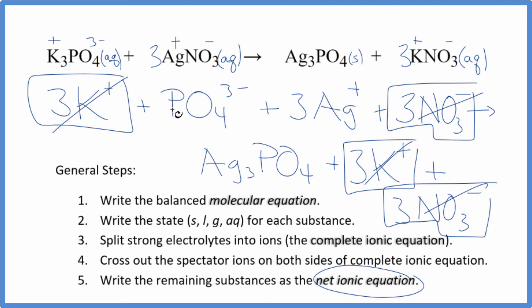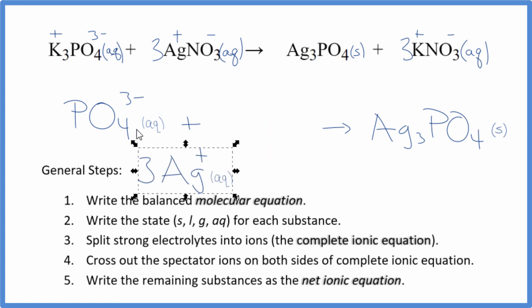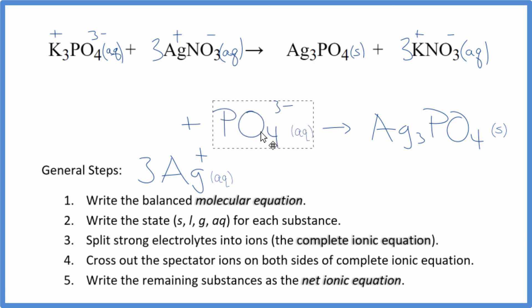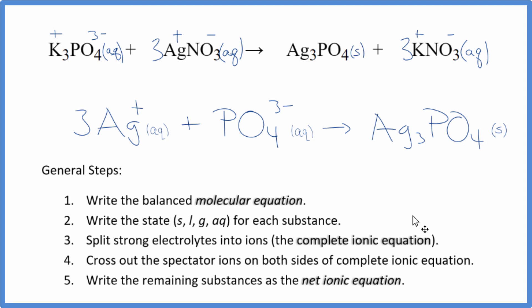I'll clean it up and write the states — we'll have our net ionic equation. This is the balanced net ionic equation for potassium phosphate plus silver nitrate. You'll see charge is conserved: we have three minus here and three times one plus, that's three plus, so all of this adds up to zero — the charge is neutral. And the atoms are balanced as well. Often you'll see the positive ion put first in net ionic equations; either way it's the same thing. This is Dr. B with the balanced net ionic equation for K3PO4 plus AgNO3. Thanks for watching.